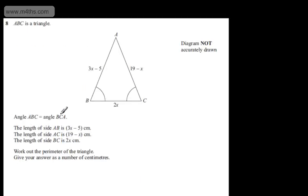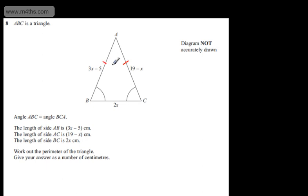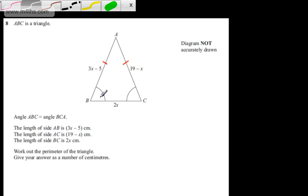Now we are told that angle ABC, this one just here, is equal to angle BCA, which is this one just here. That means we have an isosceles triangle. So I'm going to mark that this length is going to be the same as that one. We are not asked to state that it's an isosceles triangle, but if these base angles are the same, we have an isosceles triangle.